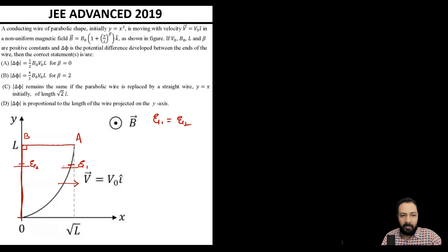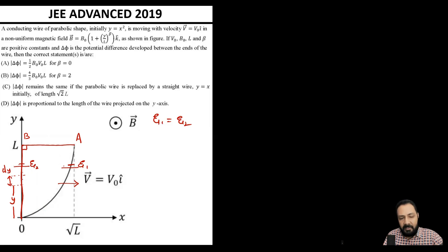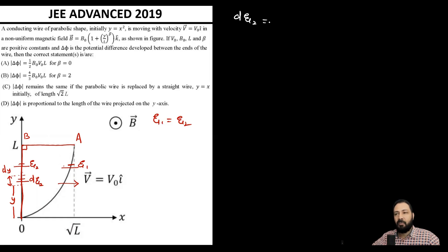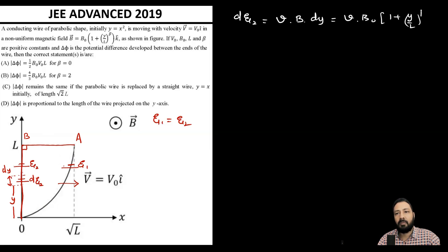I'll calculate E2, which equals E1. Consider a small element of the wire OB at height y from O with thickness dy. Due to translation, a small motional EMF dE2 is induced. Using the motional EMF formula, dE2 = v · B · dl, where v is the velocity, B is the local magnetic field, and dl = dy.